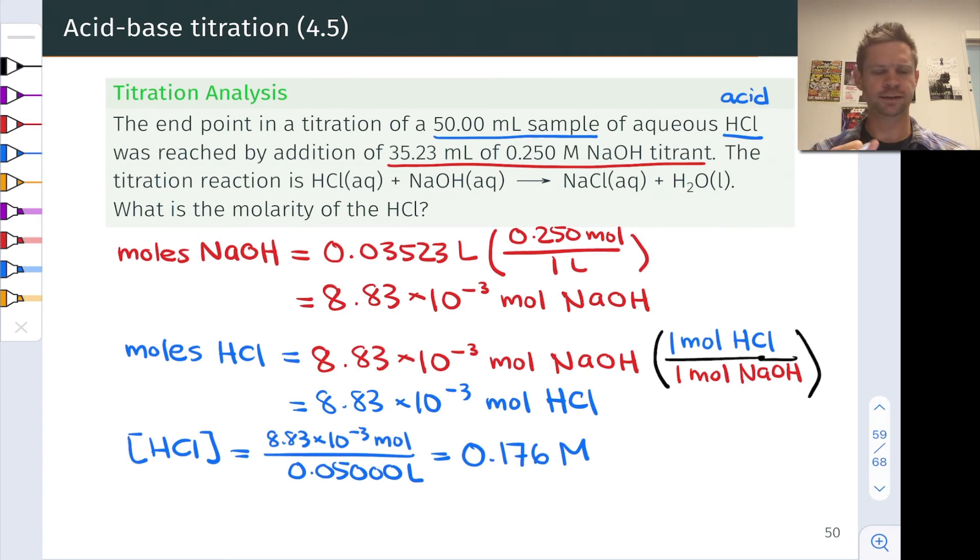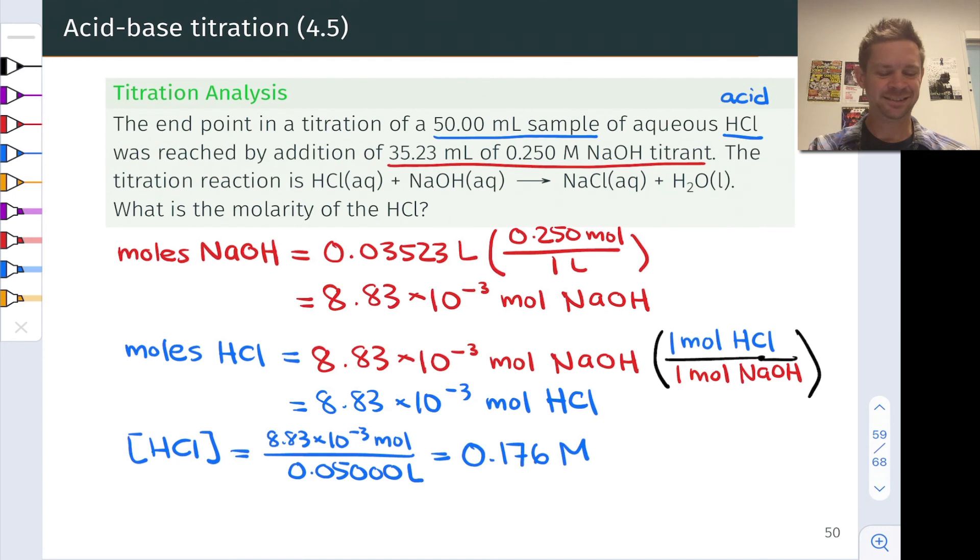This is an important conceptual point. You may be tempted to add the 35.23 milliliters to the 50 milliliters of aqueous HCl that we started with. But this isn't really conceptually correct. What we're interested in is the concentration of HCl in that original solution. The amount of sodium hydroxide we added in is sort of incidental.